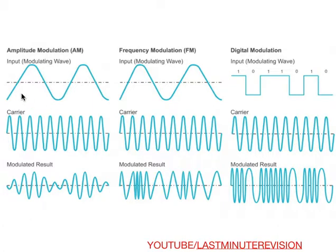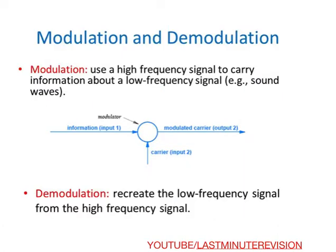Modulation uses a high frequency signal to carry information about a low frequency signal — that is, a sound wave. So the information signal has a low frequency and the carrier has a high frequency sinusoidal waveform. Here you can see the modulating signal, the carrier, and the resulting modulated signal.